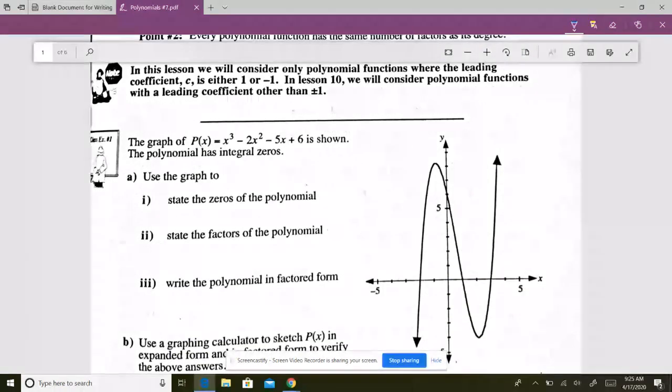So we start with this polynomial function, x cubed minus 2x squared minus 5x plus 6. This is the graph. They want us to write it in factored form. You can see that we have x-intercepts of negative 2, 1, and 3. So the zeros, obviously, negative 2, 1, and 3.